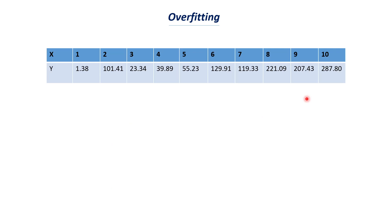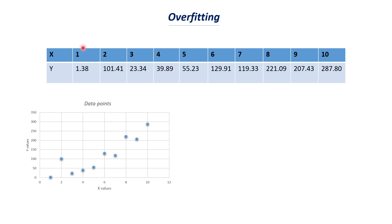Now let's understand this with an example. Let's say we have x values ranging from 1 to 10 and corresponding y values. You can think of x as years of experience and y as salary. We plot these values in a graph — for example, the first point is (1, 1.38), the second point has x=2 and y=101, and so on for all ten points.